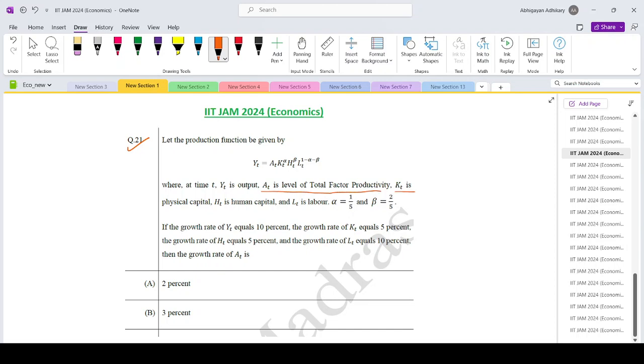k_t is the physical capital, h_t is the human capital, and l_t is the labor. Alpha is 1 by 5, beta is 2 by 5. If the growth rate of y_t is 10%, growth rate of k_t is 5%, growth rate of h_t is 5%, and the growth rate of l_t is 10%, then we want to find out the growth rate of a_t.